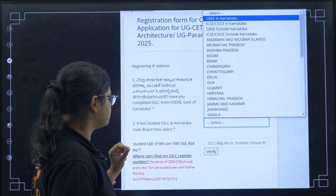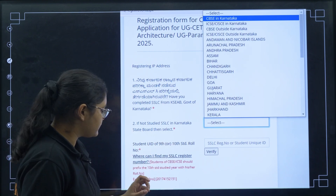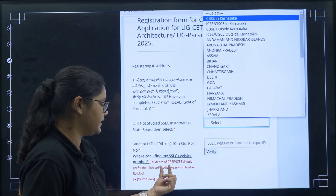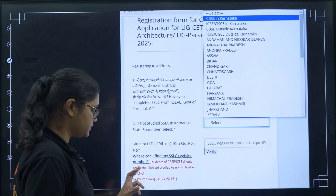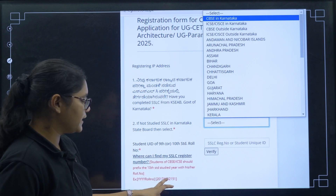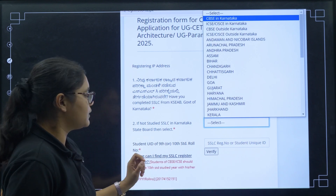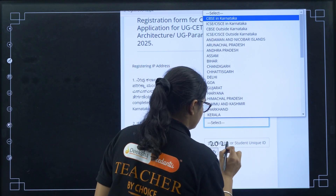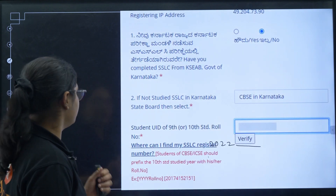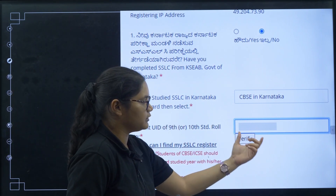After selecting your board, you have to enter your student UID or 9th/10th standard roll number. There is a specific format: students of CBSE or ICSE should prefix their 10th standard studied year with their roll number. For example, if you passed 10th in 2022, type 2022 followed by your roll number. Then click the 'Verify' button.